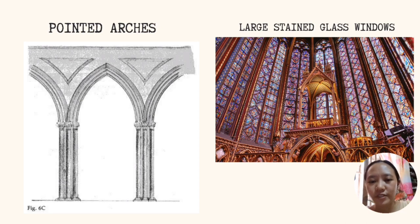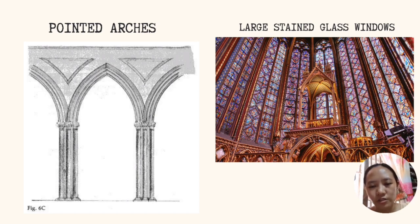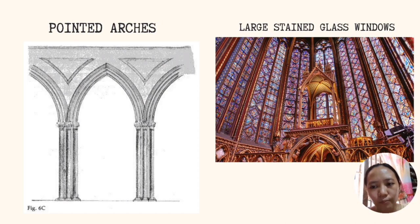The first element is pointed arches, the primary feature of many religious structures. Ample archways can be found in most Gothic churches and cathedrals. Rather than the wide rounded arches characteristic of Romanesque buildings, architects working in the Gothic style adopted the tall, thin, pointed arches found in Islamic architecture.